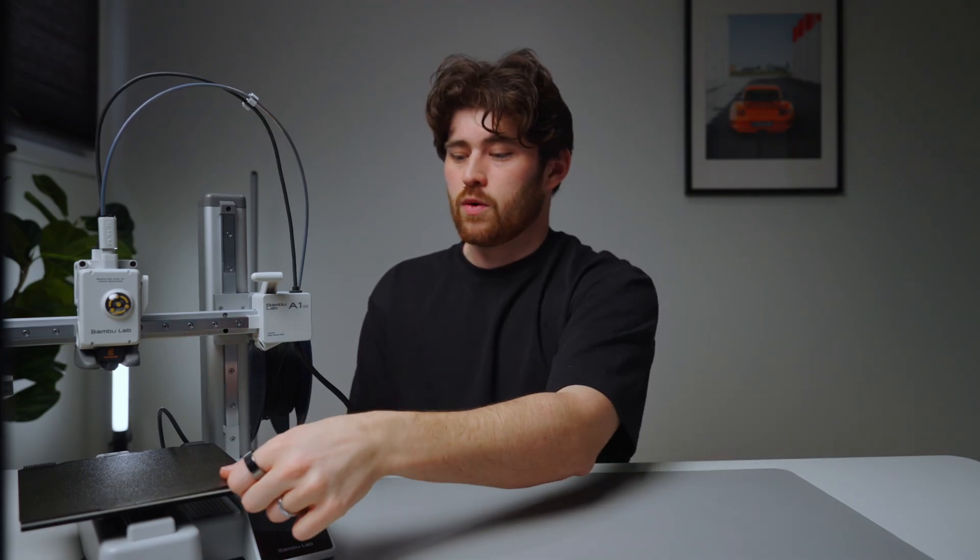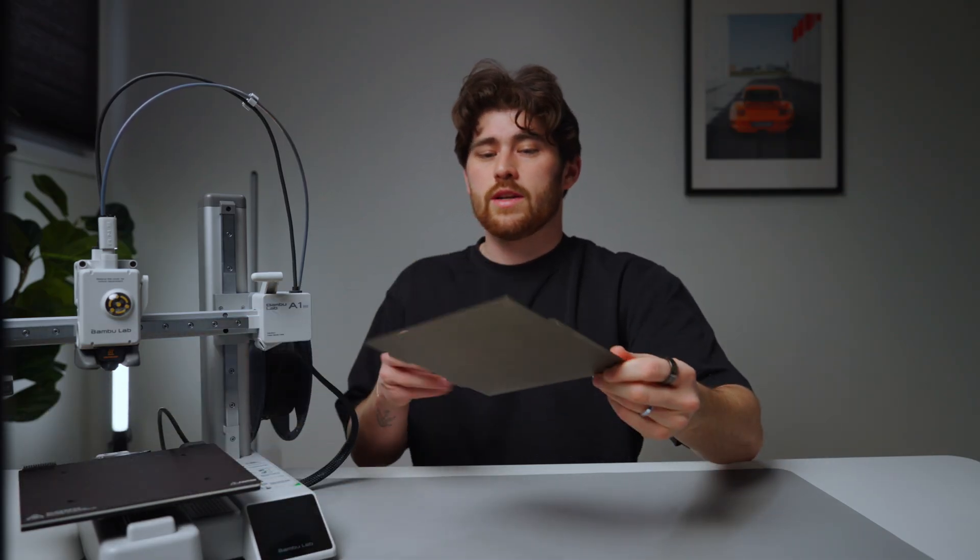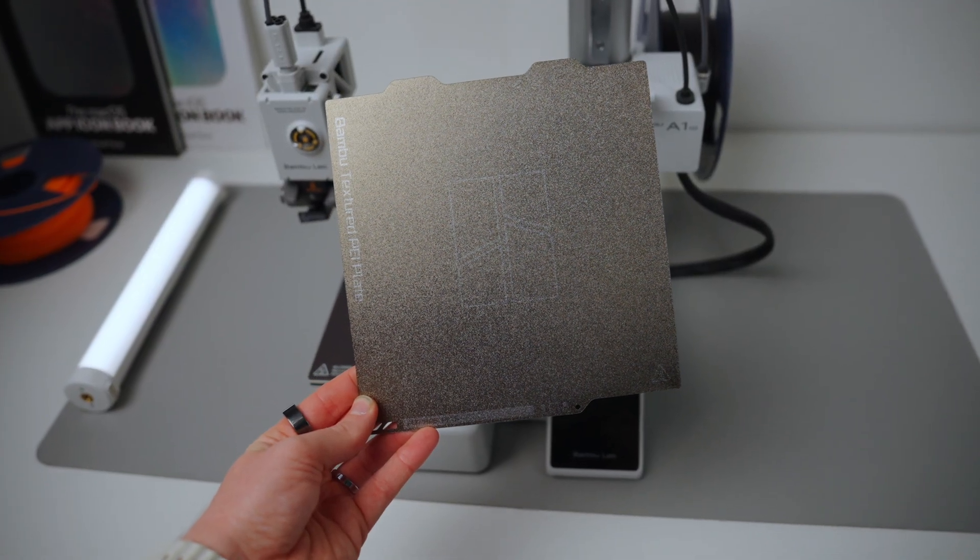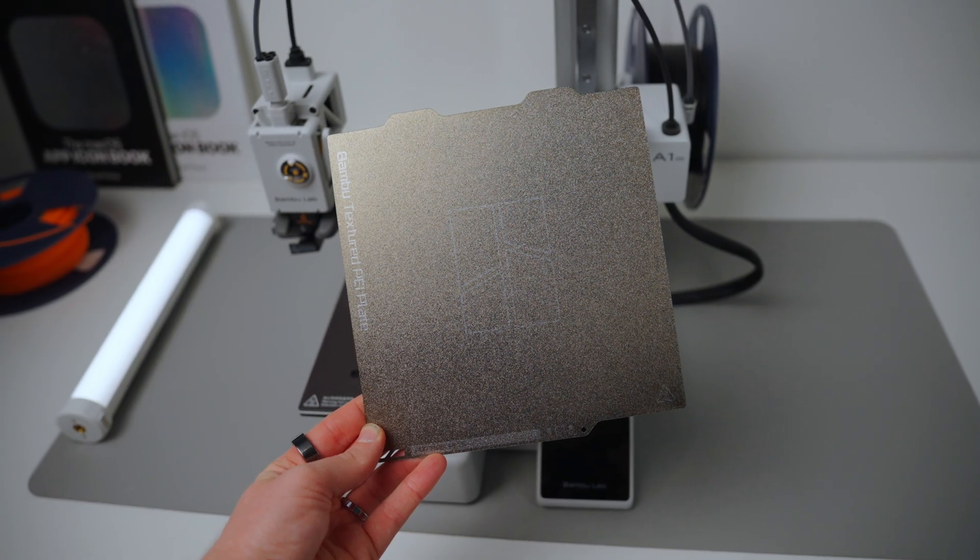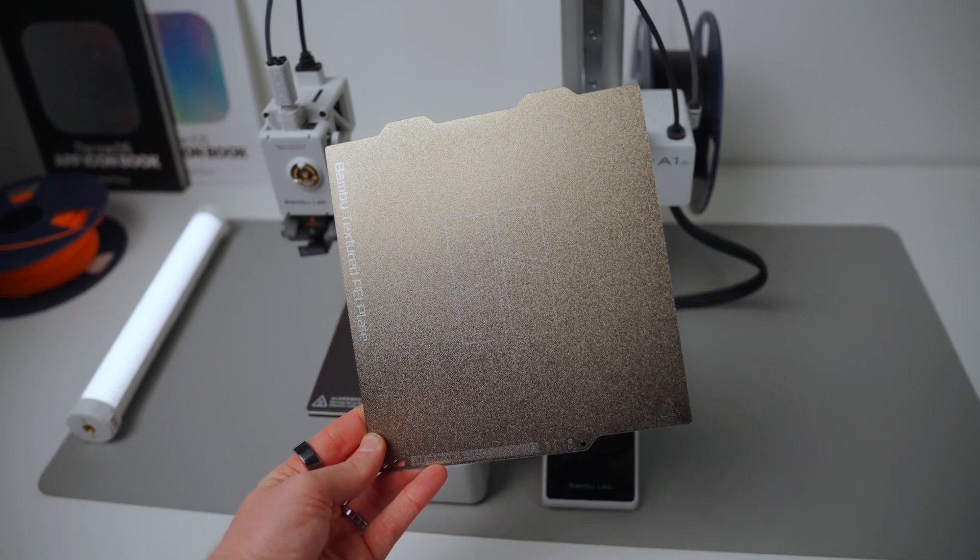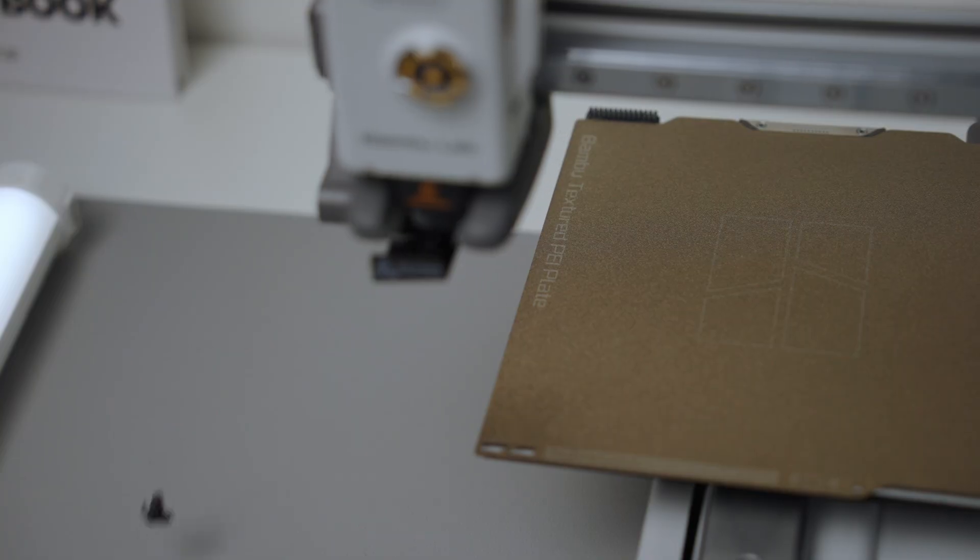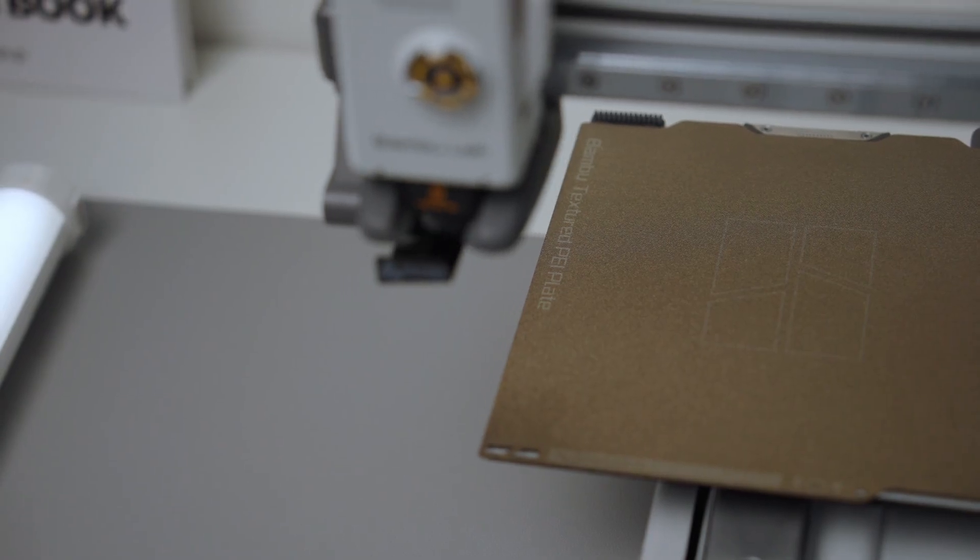The thing you're actually printing on, of course, is going to be your print plate. And this is 180 millimeters cubed, which is about seven inches in any direction. And the plate that Bamboo gives you is this textured PEI plate. It's fine. It just means the part that's printed on the plate is going to have some texture to it.